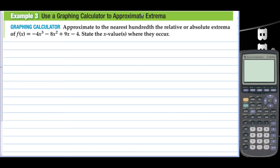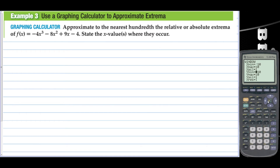Use a graphing calculator to approximate to the nearest hundredth the relative or absolute extrema of the function y equals negative 4x cubed minus 8x squared plus 9x minus 4. State the x values where they occur. Let's graph that. We can't see a lot of it, so we need to change the window. Let's lower the y value — how about negative 20? Not quite, so let's go back to the window and try negative 40. And there we have it. We have a local minimum and a local maximum.